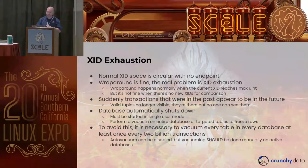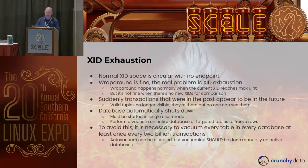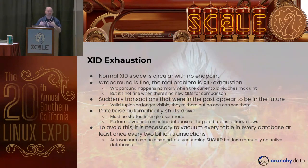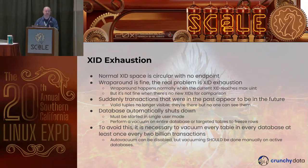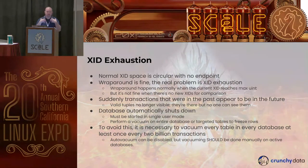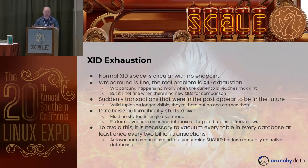To avoid this, it's necessary to run vacuum on every table in every database at least once every two billion transactions. You cannot run a PostgreSQL database without vacuuming. You can disable auto-vacuum — there are valid reasons for that, like running vacuum at specific times to avoid load — but the responsibility is then on your shoulders to manage it.